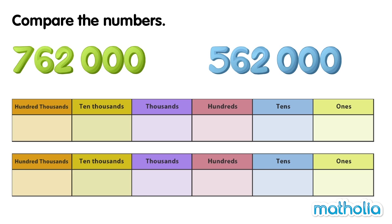Compare the numbers. Let's compare 762,000 and 562,000. Let's start by writing the numbers in a place value chart.